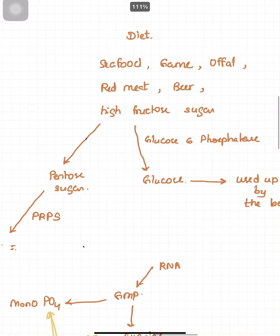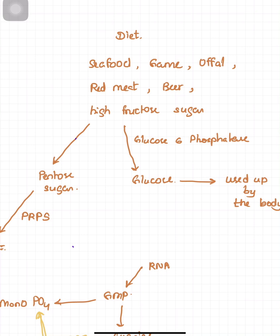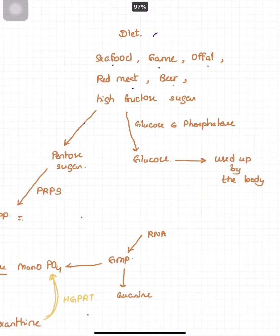Let's start with the dietary purine pathway. Purine is the precursor of uric acid, so diets rich in purine could lead to hyperuricemia. These foods include some seafood, game meat such as rabbit or deer, offal, red meat, and high-fructose beverages, all of which can result in hyperuricemia.